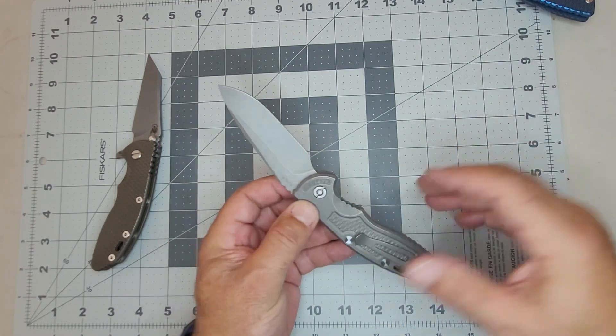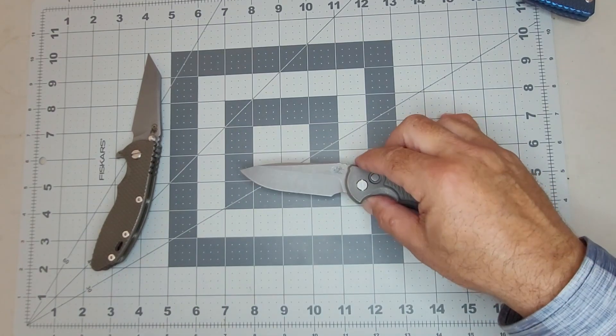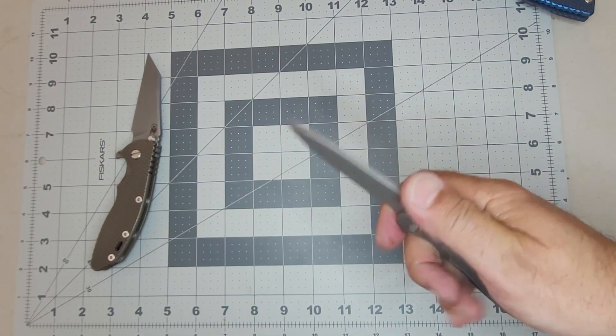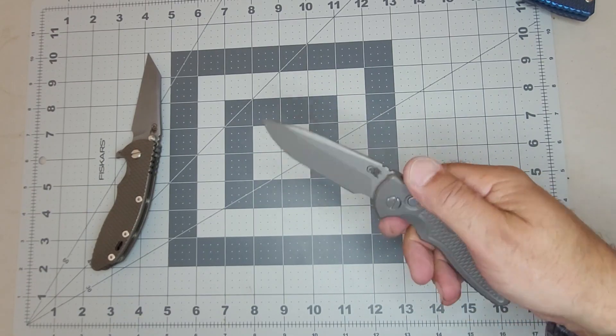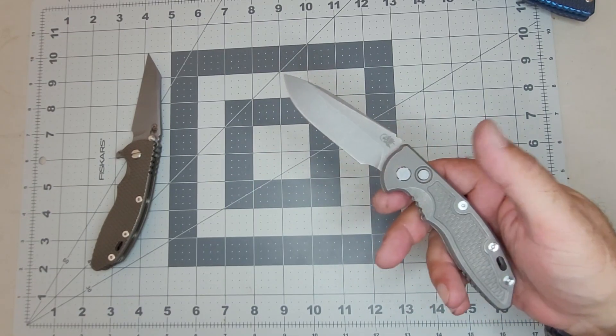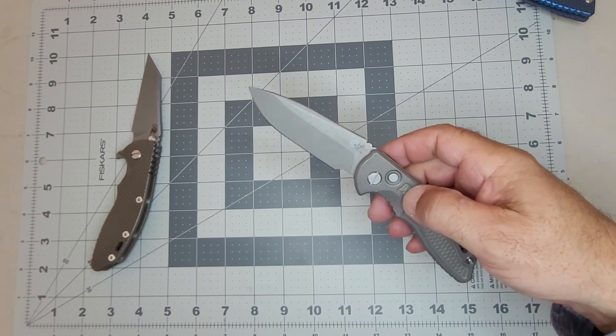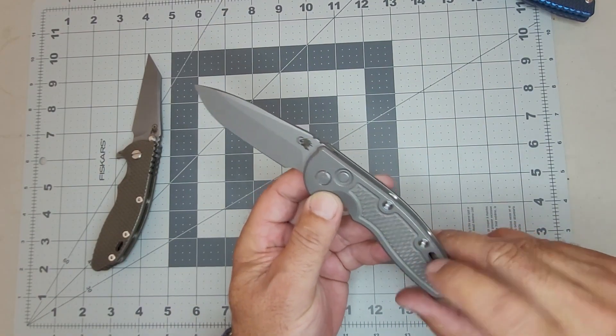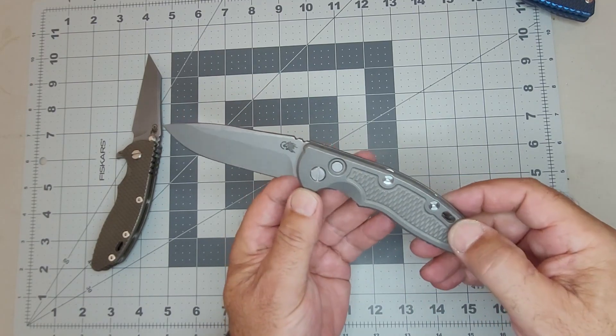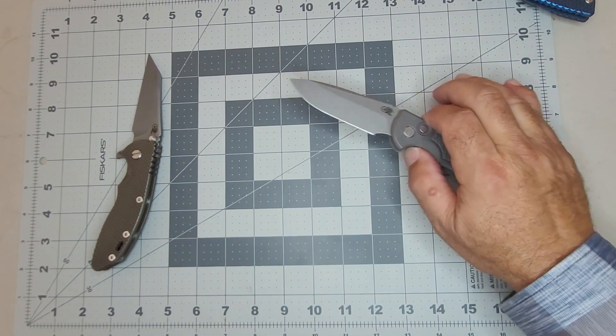I guess there's a finger choil here, but it's pretty darn close to that edge. I don't really get these guys who talk about needing a finger choil. I guess if you're out in the woods feather sticking for hours you need that grip, but everyday for me it's no big deal. This has got some weight.